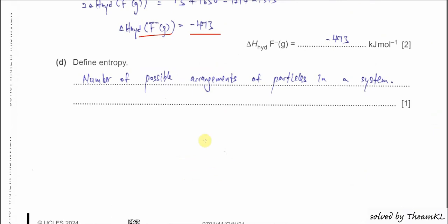Part D: Define entropy. Entropy is the number of possible arrangements of particles in a system — it measures how many ways the energy or particles can be arranged. The more arrangements possible, the larger the entropy. For example, a gas has much higher entropy than a solid, because gas particles can move in many directions, while solid particles are in fixed positions.